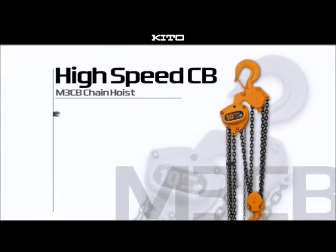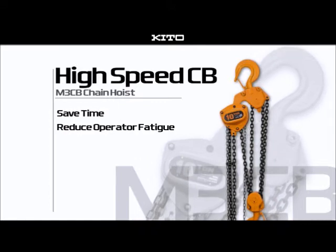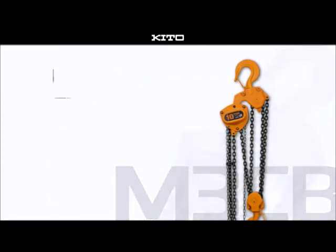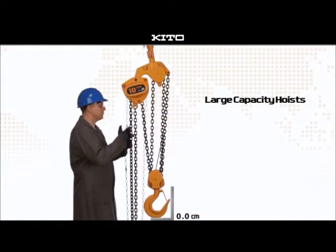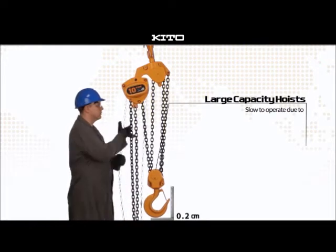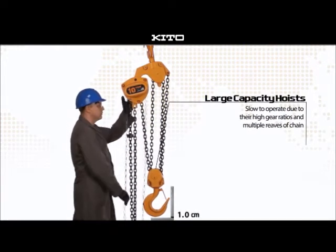Now, Kito is proud to introduce a new high-speed option for the M3CB Hoist which promises to save time and reduce operator fatigue during large capacity lifts. Large capacity hoists are notoriously slow to operate due to their high gear ratios and multiple reads of chain.